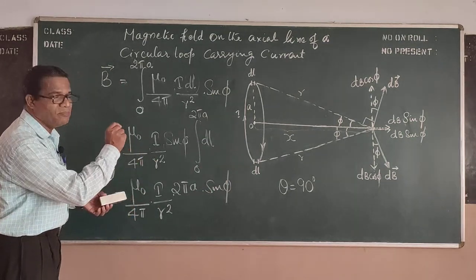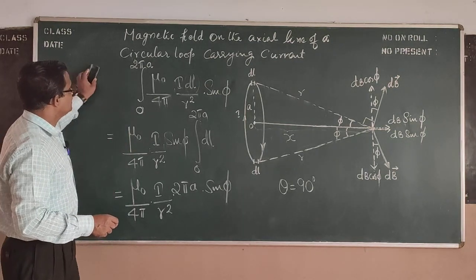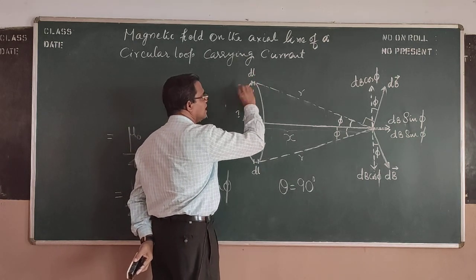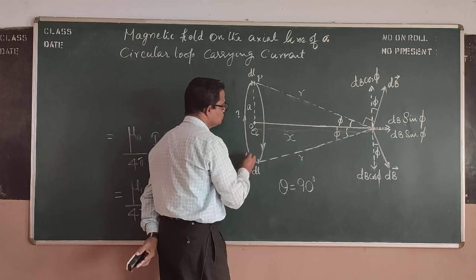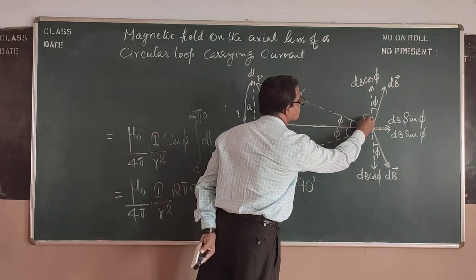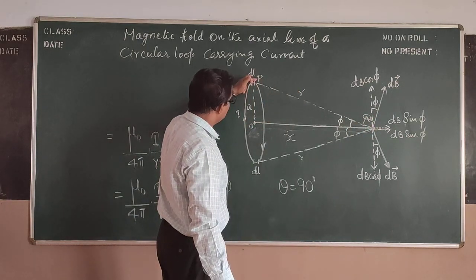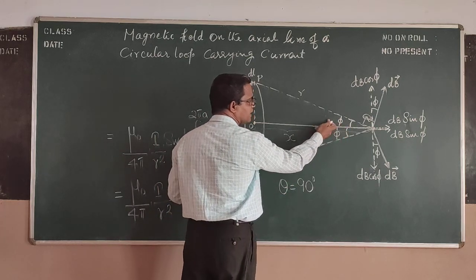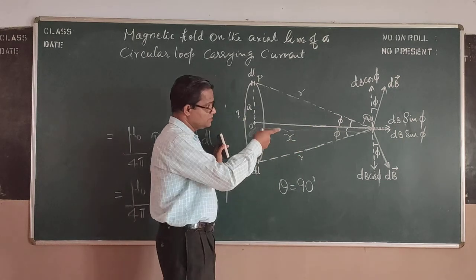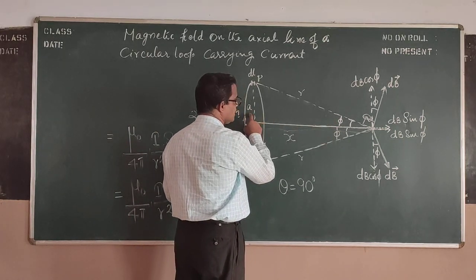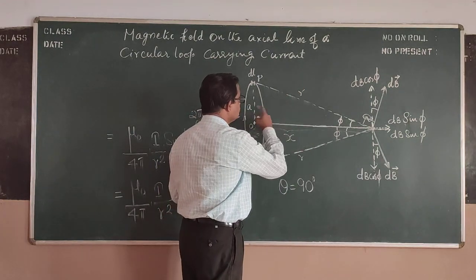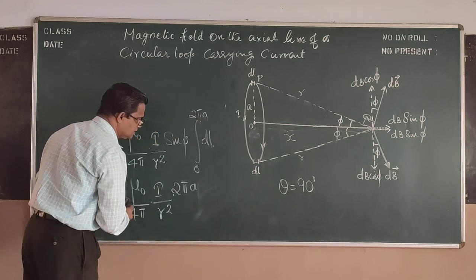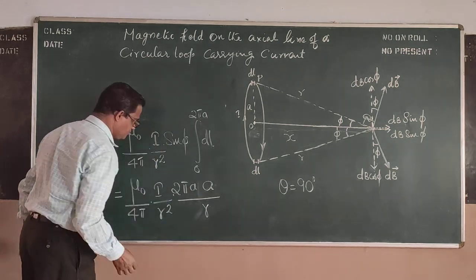This is the answer we are writing but there is a problem. This sine phi we just assume so we have to rewrite into other measurable quantities. For that let me assume from the triangle, if I take sine phi, sine phi will be opposite side by hypotenuse so sine phi is equal to A by R.